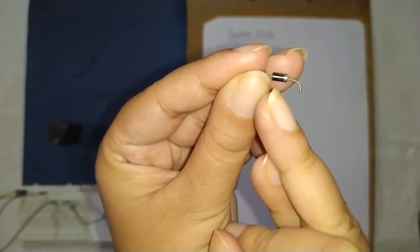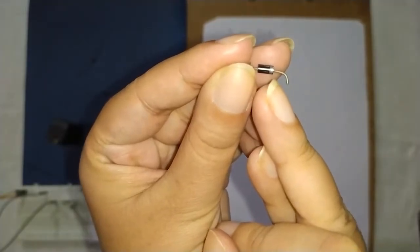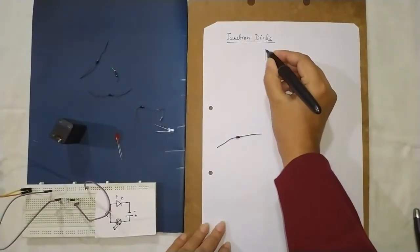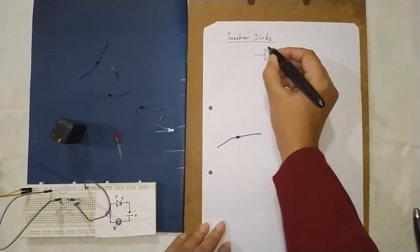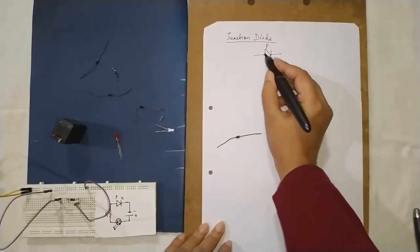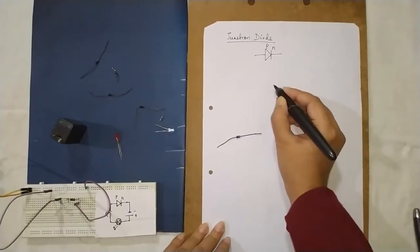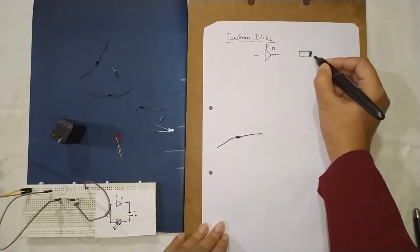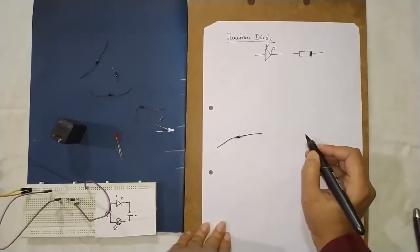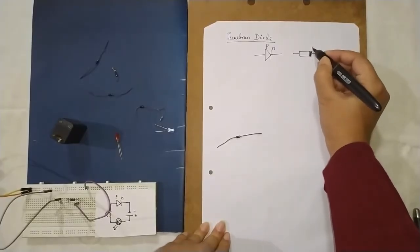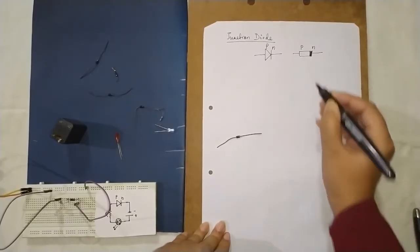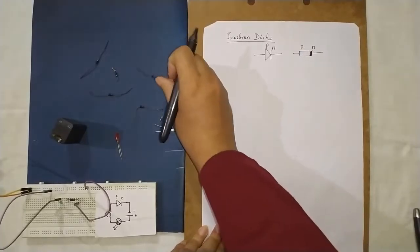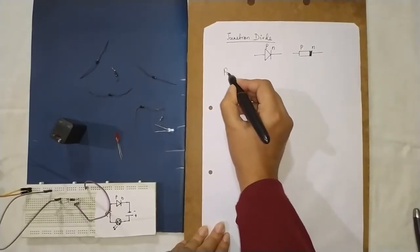The black portion represents the P side and the silver portion represents the N side. If you draw the circuit symbol, the big arrow represents the P side and the straight line represents the N side. This is a two-terminal device — the silver portion is N and the black portion is P.